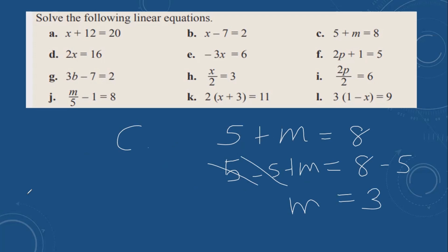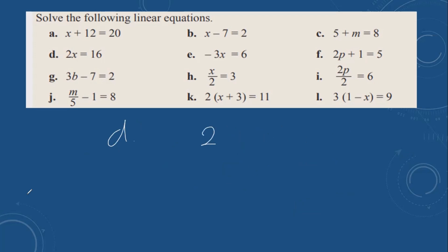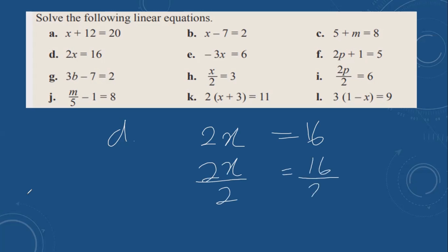Then d: 2x equals 16. What is the opposite of multiplication? That is division. So you can remove the 2 by doing division. You have to do the same thing to the other side also. 2 and 2 cancel out. x is equal to 16 divided by 2, which is 8.